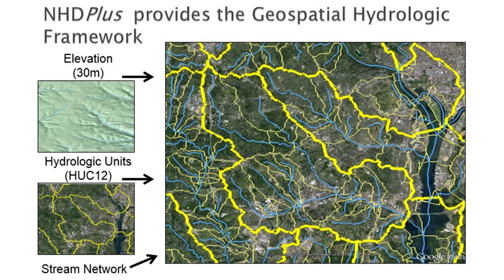This geospatial hydrologic framework enables landscape attributes that have been allocated to the catchment to be associated with the local stream segment within the catchment. For example, it enabled precipitation and temperature data to be associated with the network for purposes of modeling stream flow volume and velocity.